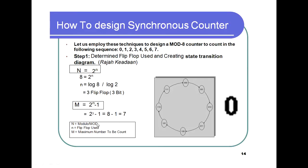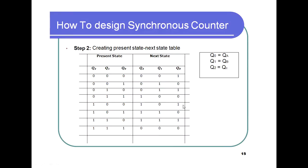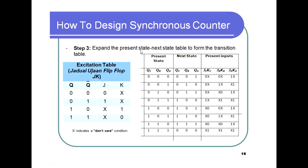With three flip-flops (QA, QB, QC corresponding to Q0, Q1, Q2), we construct the present-state/next-state table. The excitation table for JK flip-flops is then used to expand this into a transition table with columns JA, KA, JB, KB, JC, KC for all states 0 through 7.